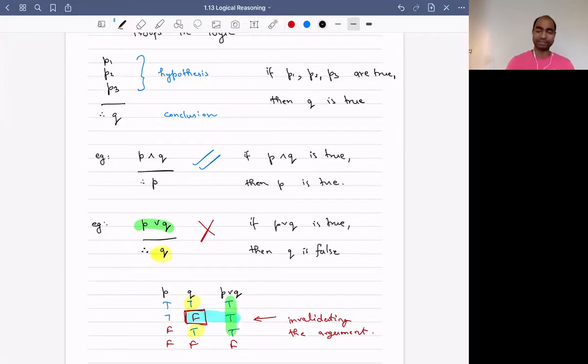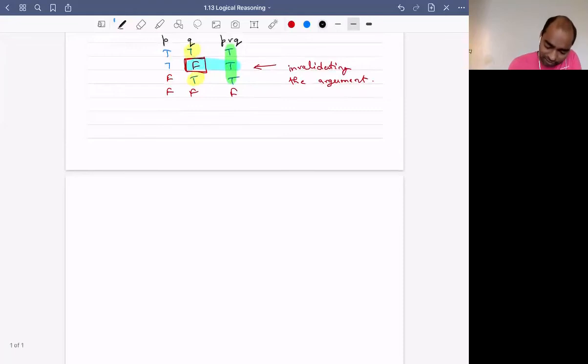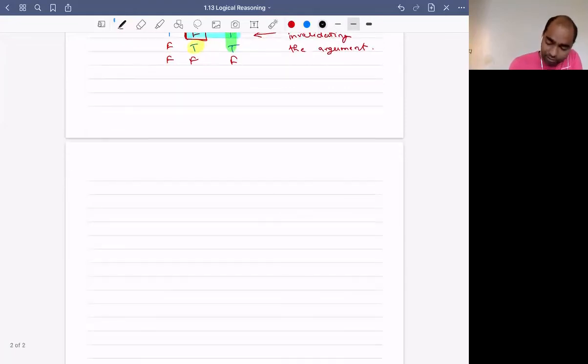Let's do one more example. And this is the most common example in mathematics, at least, if not in logic. P, P implies Q. If P is true and P implies Q is true, then Q is true. Let's check this using truth tables.